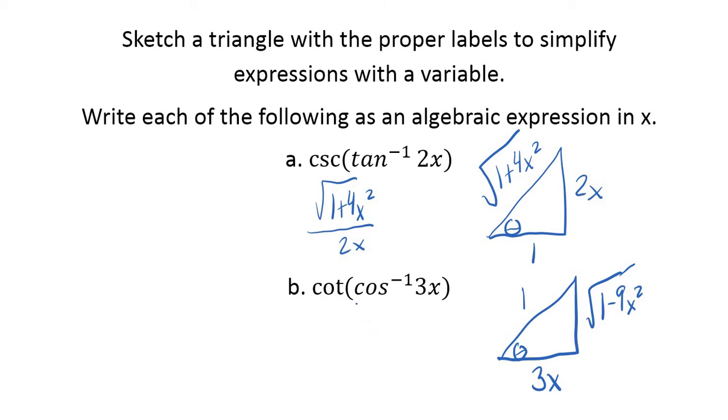And so now we want the cotangent of theta. Of course the tangent is opposite over adjacent, so we just flip it. So it's 3x over the square root of 1 minus 9x squared. Again, don't be intimidated by these. It's the exact same thing we just did. The only difference when you use Pythagorean Theorem, you're going to have some x's in there. You've got to find some expressions. But then you just use SOHCAHTOA, identical to what we just did.